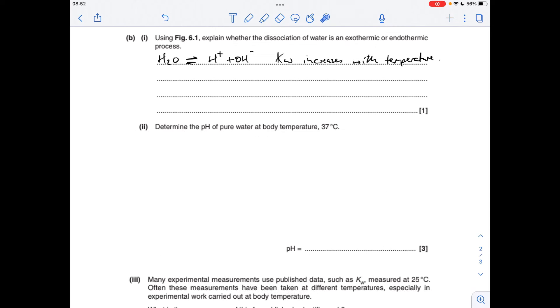Part B now, we've got to use the graph to explain whether the dissociation of water is exothermic or endothermic. So there's the process there. Now from the graph, we can see that Kw is increasing with temperature. So what that means is an increase in temperature is favouring the forward reaction, because Kw is a measure of dissociation. So therefore, this forward reaction must be endothermic.